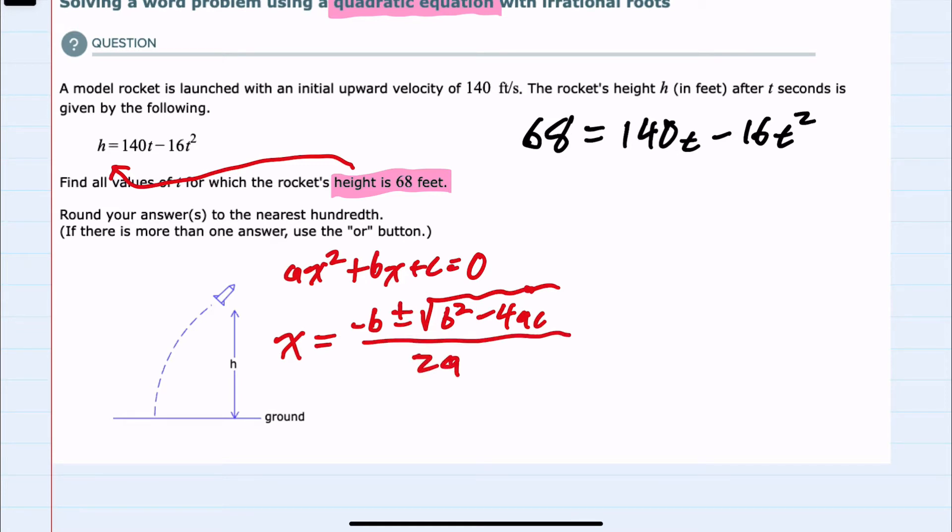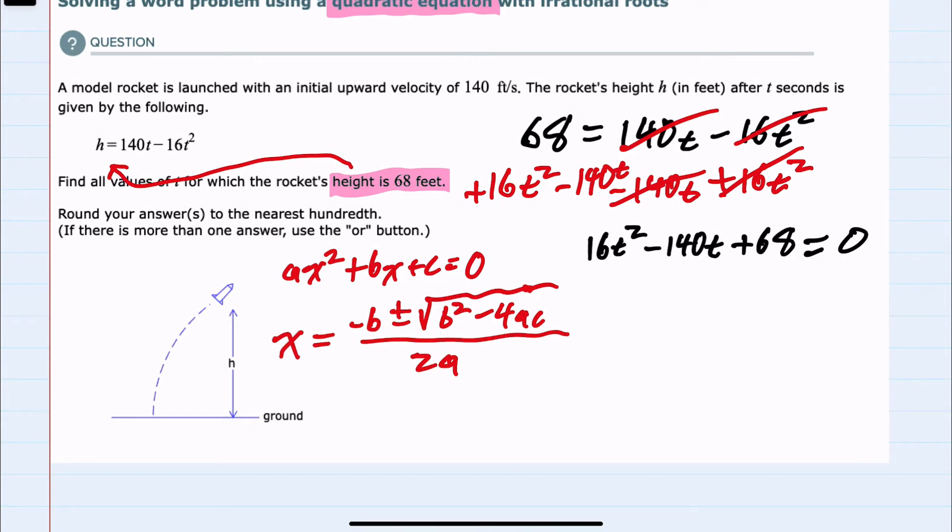And while this example is not in standard form, to set it equal to zero I can just move everything to one side. I'm going to move things to the left by adding 16t squared and subtracting 140t from both sides, cancelling everything on the right giving me zero. And then on the left, putting these in descending order: 16t squared minus 140t plus 68 equals zero.